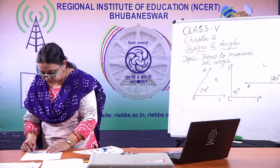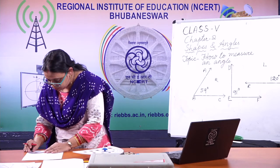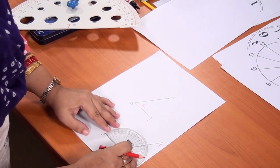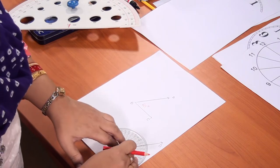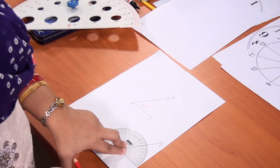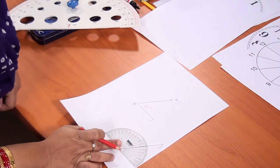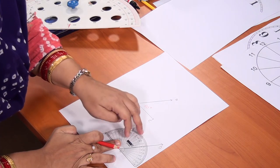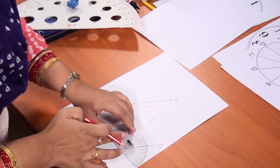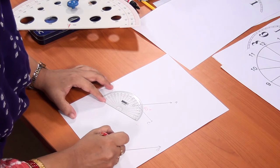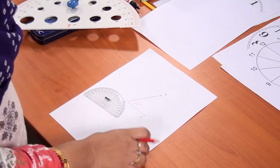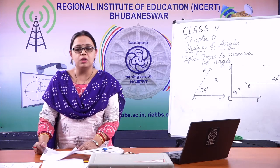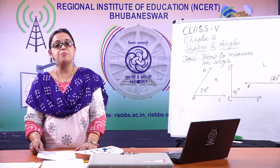Now measure the second angle. Same process — adjust the vertex of the protractor to the vertex of the angle. Which side is the opening? Left. So which scale do we use? The outer scale. Counting: 10, 20, 30, 40, 50, 60, 70, 90, 100, 110, and 120. So this angle is 120 degrees. Like this, you can draw angles with your ruler and pencil and enjoy measuring them.